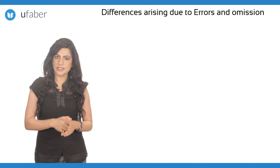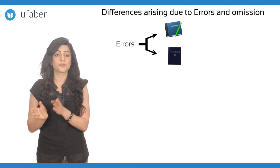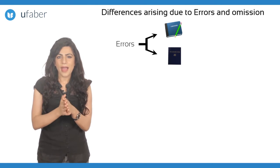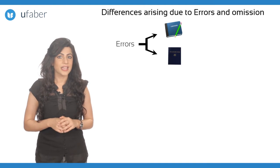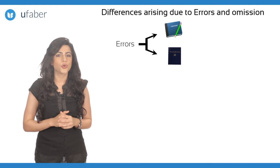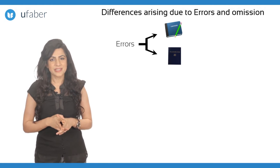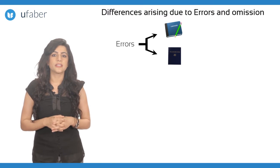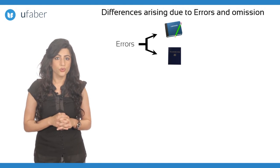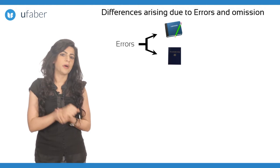While recording the entries, errors may occur in both the cash book as well as the pass book. A bank may rarely commit an error, but if it does, the balance shown in the pass book will naturally differ from that shown in the cash book. Similarly, if an error is committed in the cash book, then the balance shown in it will differ from that of the pass book.